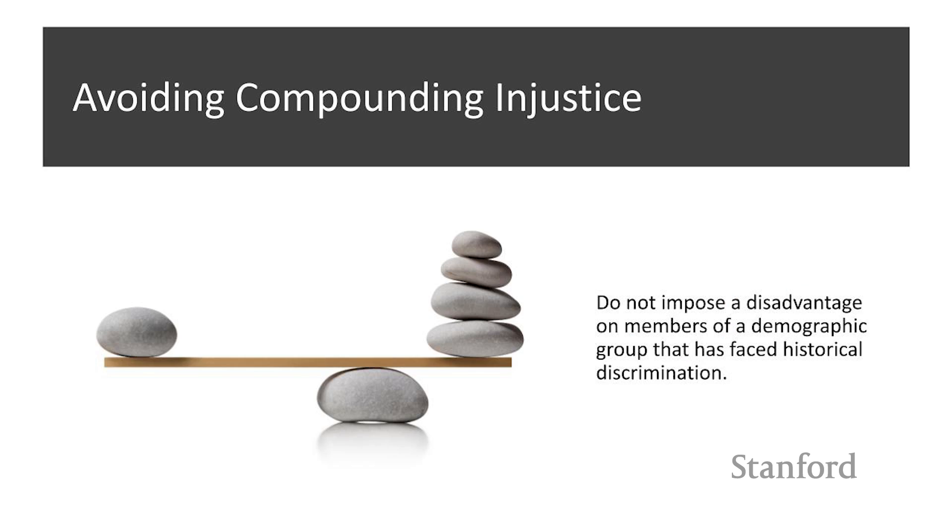This policy would be supported by a principle that focused on avoiding a course of action that disproportionately burdens members of marginalized communities. Some have called this the anti-compounding injustice principle, and it is driven by the idea that algorithmic decision systems should be deliberately focusing on avoiding contributing to historical injustice and discrimination.